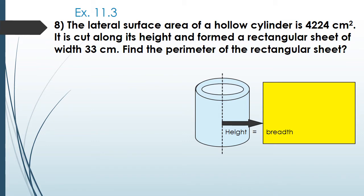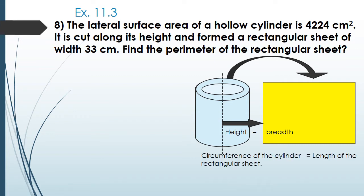Before solving, note that the circumference of the cylinder will be equal to the length of the rectangular sheet, since the circumference makes the length. So the circumference of the cylinder is equal to the length of the rectangular sheet.